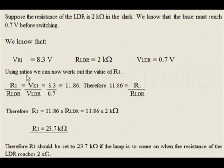We need to find R1. Using ratios, we can now work out the value of R1. R1 divided by RLDR equals VR1 divided by VLDR. That equals 8.3 divided by 0.7, which equals 11.86.